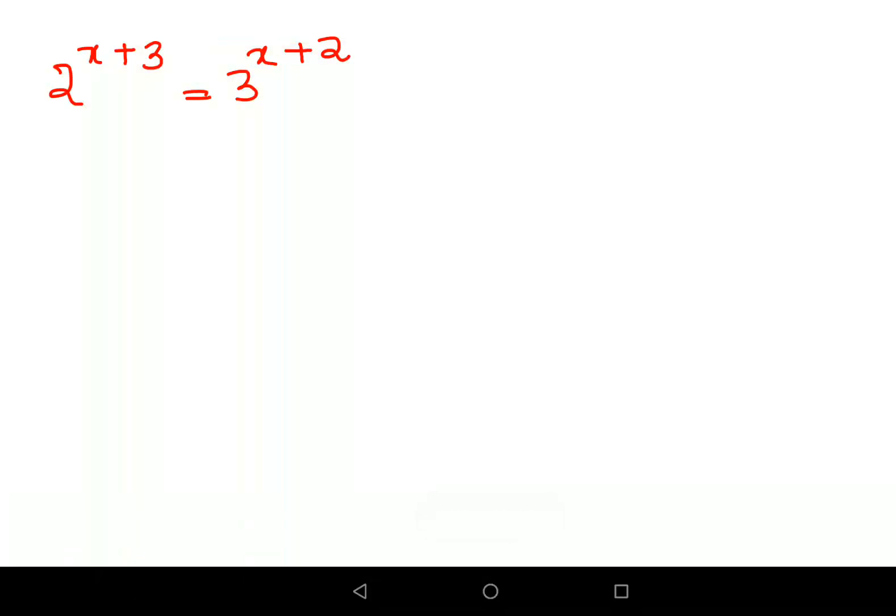Welcome everyone, so this is a very interesting problem. A lot of people thought that you can actually simplify this further and write this as 2 raised to x times 2 raised to 3 equals 3 raised to x times 3 squared, right?